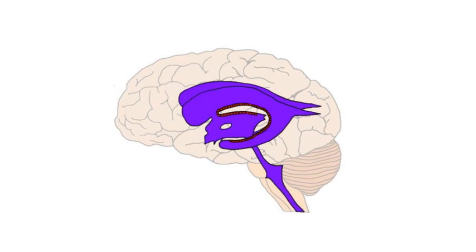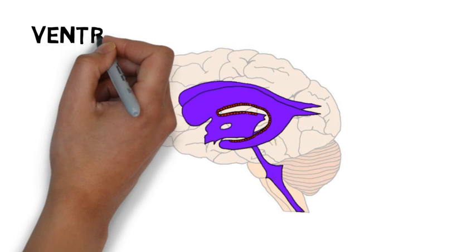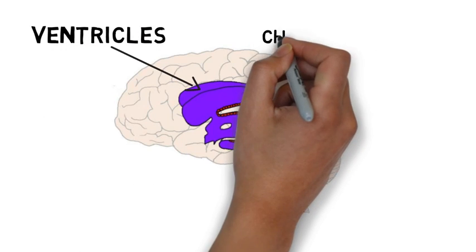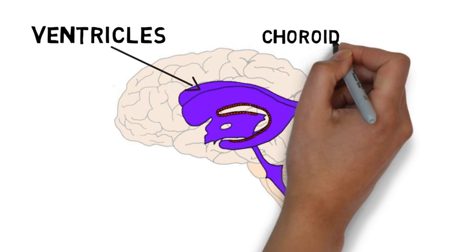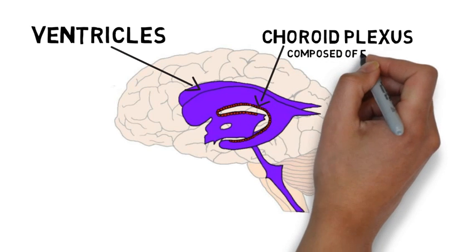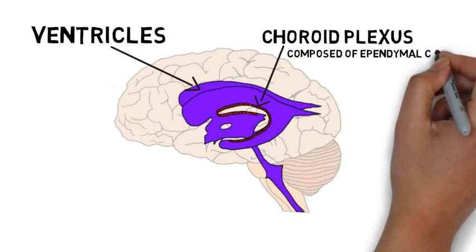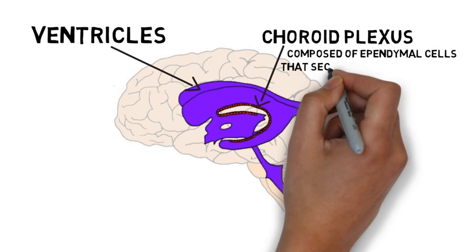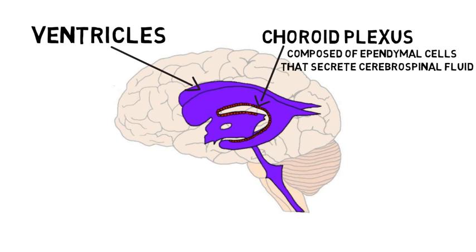The ventricles are a network of cavities that are distributed throughout the brain. They are lined with a specialized membrane called the choroid plexus, which is composed of glial cells called ependymal cells. Ependymal cells are specially designed to secrete cerebrospinal fluid, which then flows through the ventricles and around the brain. Thus, the main role of the ventricles is the production and distribution of cerebrospinal fluid.